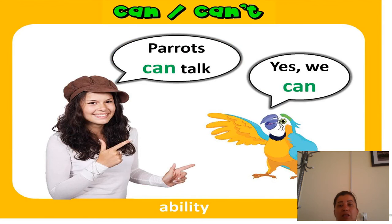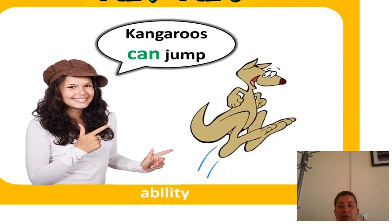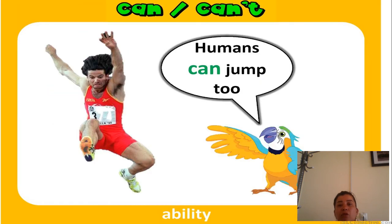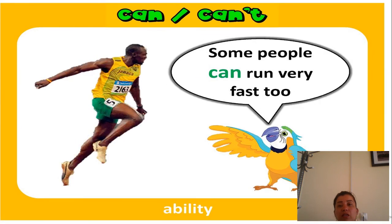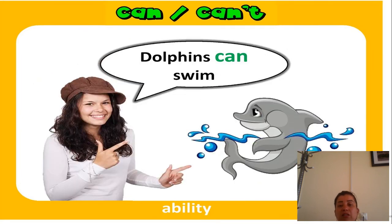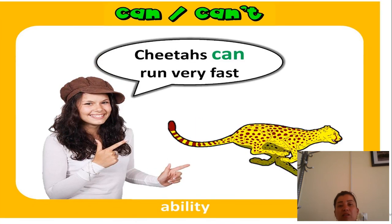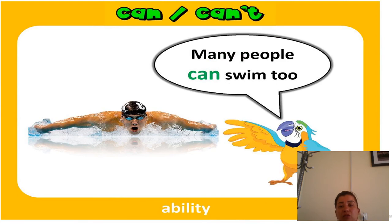Can and cannot. For example: parrots can talk — ability meaning. Kangaroos can jump — also ability meaning. Humans can jump too — ability meaning. Some people can run very fast — ability meaning. Dolphins can swim — ability meaning. Sharks can run very fast. Many people can swim too.